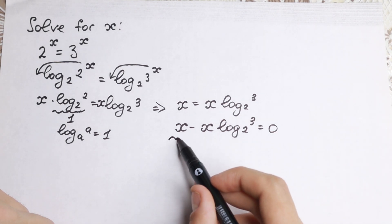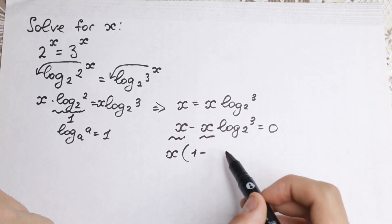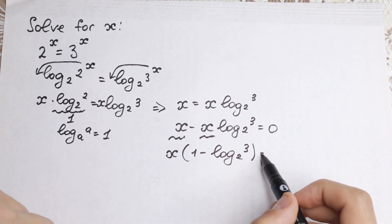I hope you see right now that right here we have x, so we can easily factor it as a common. So we have x(1 - log₂(3)) equals 0.